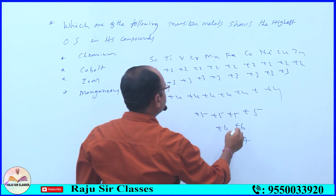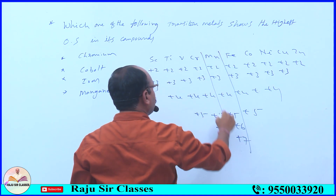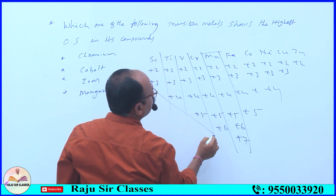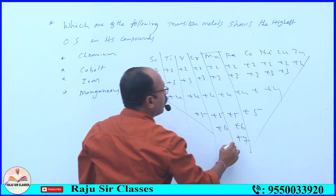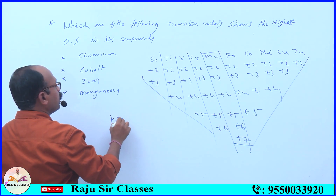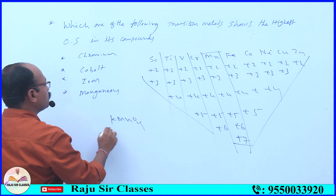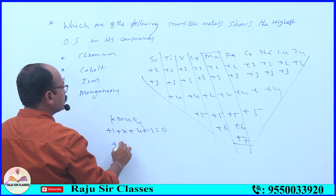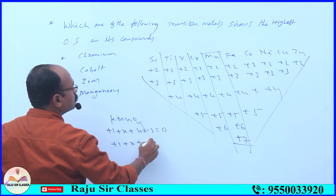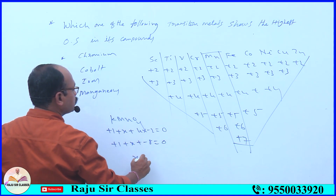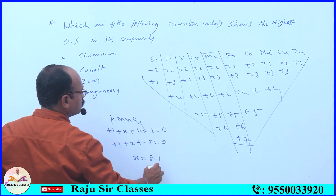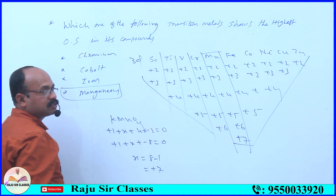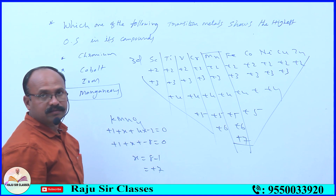The highest oxidation state is in KMnO4. Here, K is plus one, this is X, four oxygens give minus eight. So: plus one plus X minus eight equals zero, X equals plus seven. So manganese in the 3D series shows +7 oxidation state.